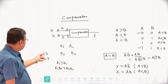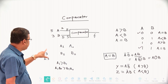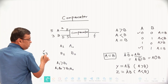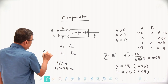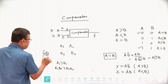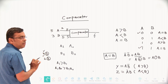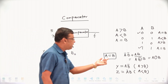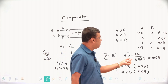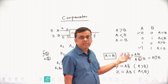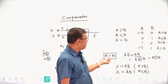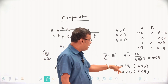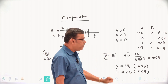In a 2-bit comparator: if A1 is greater than B1, then the whole 2-bit is greater. Another case: if A1 equals B1 and A0 is greater than B0, then the whole 2-bit is greater than the other 2-bits. For equality in a single bit — A0 XNOR B0, and A1 XNOR B1. As far as greater is concerned, if one bit is greater: AB-bar; if one bit is less: A-bar B.